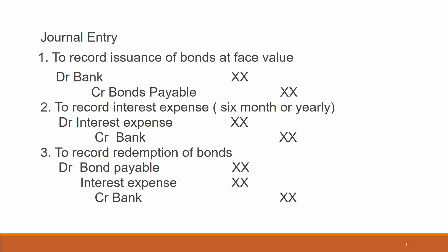Number two, to record interest expense — either six months or yearly payment: debit interest expense, credit bank. Number three, to record the redemption of bonds: debit bond payable, debit interest expense (depends on the situation), and credit bank. Sometimes you just record debit bond payable, credit bank.